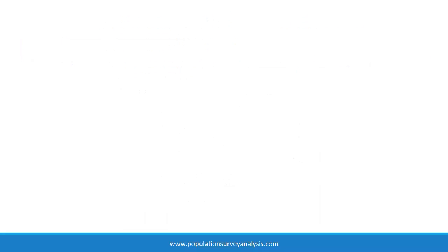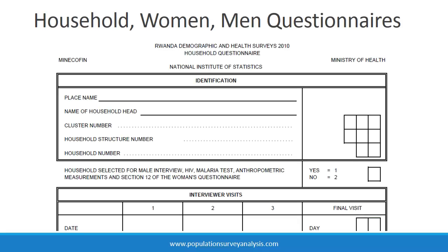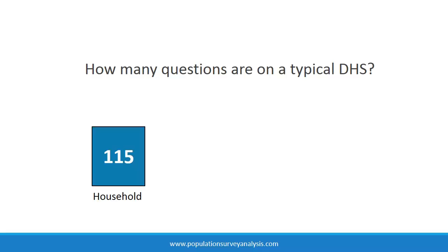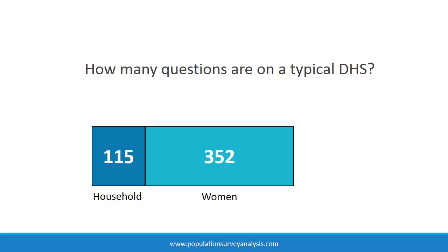DHS surveys are comprised of three questionnaires: the household questionnaire, women's questionnaire, and men's questionnaire. These questionnaires are administered by an interviewer in the respondent's home, and the respondent's answers are recorded on paper by the interviewer. During a typical DHS interview, women respondents answer about 115 questions about their households and household members, and 352 questions about themselves and their children. A single interview can easily take two hours to complete. Men respondents are asked roughly 165 questions. Additional time is needed in many surveys to collect blood samples and measure the height and weight of respondents and their children.